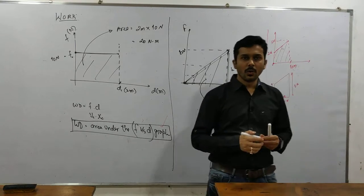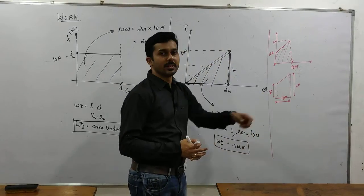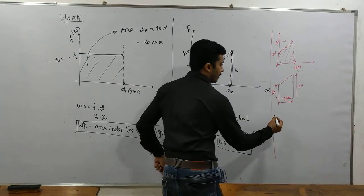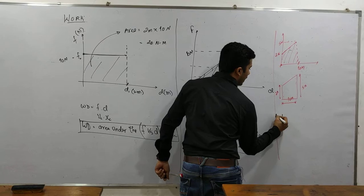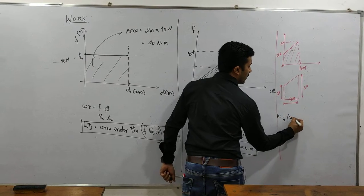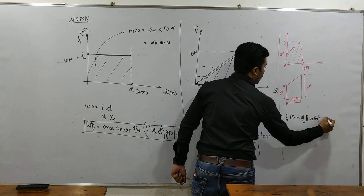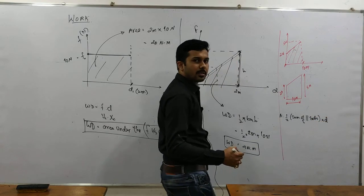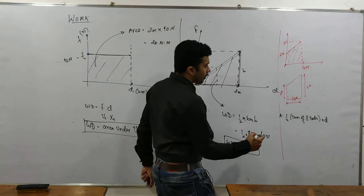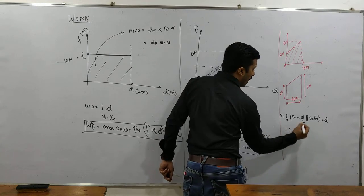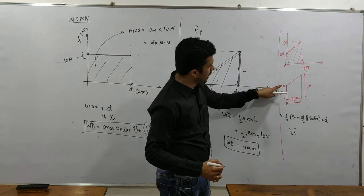Can I now find the area of trapezium? Yes, you are correct. It is very easy. Area is half into sum of parallel sides into distance between the parallel sides. So, half. What is sum of parallel sides?